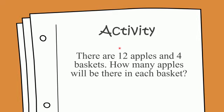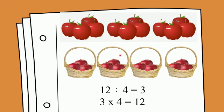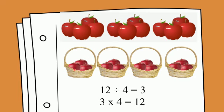Here's an activity for you, my dear students. There's a division story that states: there are 12 apples and four baskets — how many apples will there be in each basket? So you have to divide 12 apples into four baskets. Here we have a pictorial demonstration of our division story. Let's count the apples: one, two, three, four, five, six, seven, eight, nine, ten, eleven, twelve — twelve apples and four baskets. Now I'm going to divide these 12 apples into four baskets.